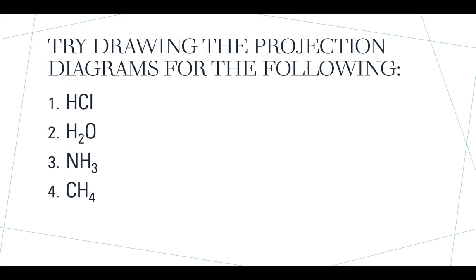What I'd like you to do now is draw the projection diagrams for hydrogen chloride, water, ammonia, and methane. Have a go at drawing those using triangles for bonds coming towards you and dashed lines for bonds going away, and let me know how you get on. I will be posting the answers later in the week, along with consolidation videos and work if you feel you need more practice.